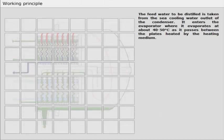The feed water to be distilled is taken from the sea cooling water outlet of the condenser. It enters the evaporator, where it evaporates at about 40 to 50 degrees Celsius as it passes between the plates heated by the heating medium.